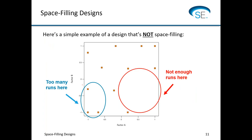Here is an example — a counter example. Two factors: a design that's not space filling. Notice the orange points are the runs you're going to do. You have factor A and factor B. In this red circle of doom, you have almost no runs, while at this corner in the blue circle, you have a bunch of points clustered together. This is what I would consider not a very space filling design — it doesn't fill all of the space nicely or spread the points evenly apart.